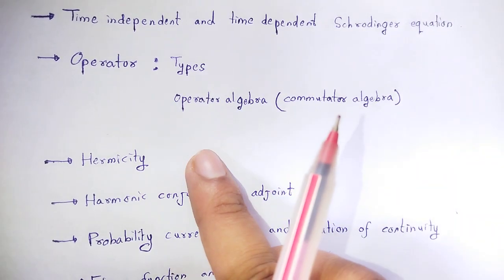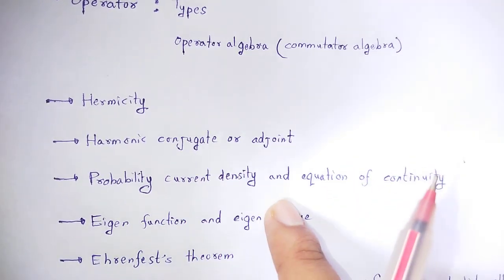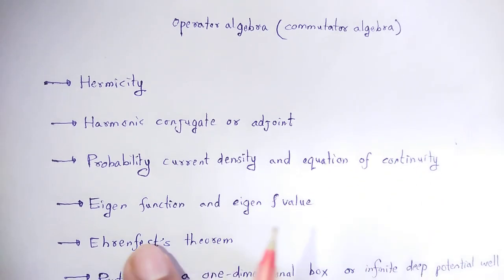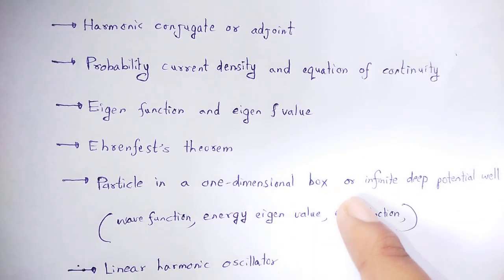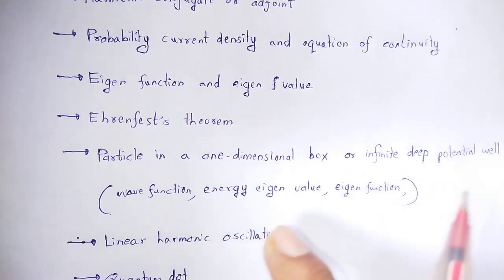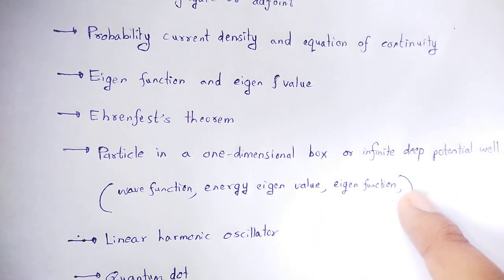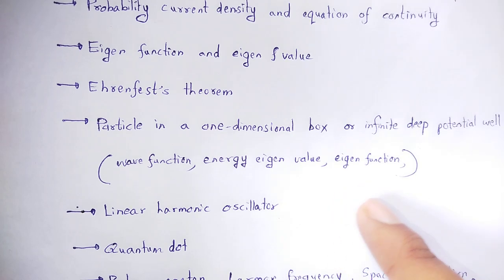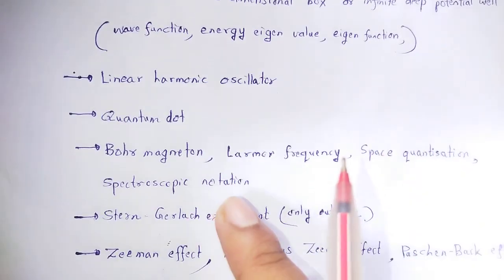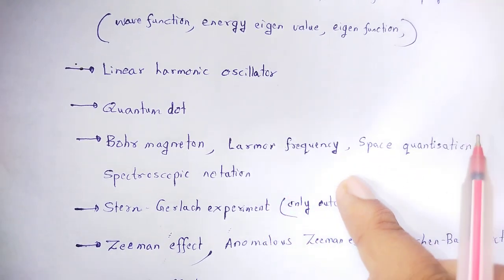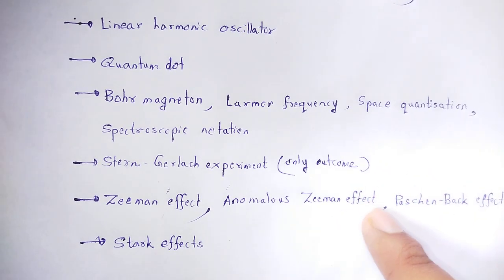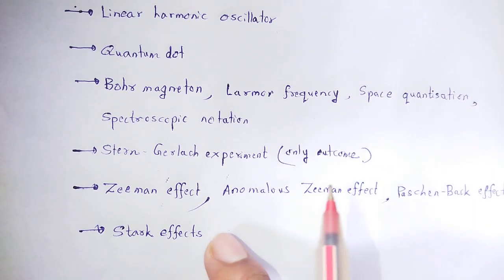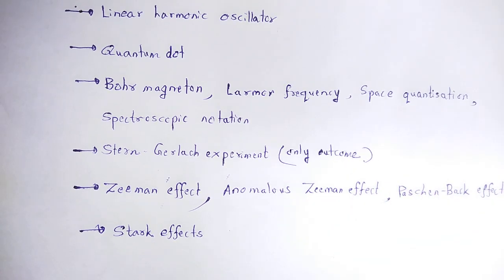To recap the important topics: operators and Hermiticity, harmonic conjugate or adjoint, probability current density and equation of continuity, eigenfunction and eigenvalue, Ehrenfest's theorem, particle in a one-dimensional box or infinite deep potential well with wave function and energy eigenvalue, linear harmonic oscillator with energy expression, quantum dot, Bohr magneton, Larmor frequency, space quantization, spectroscopic notation, Stern-Gerlach experiment and its outcomes, Zeeman effect, anomalous Zeeman effect, Paschen-Back effect, and Stark effect. These are the important topics in Quantum Mechanics and Applications.